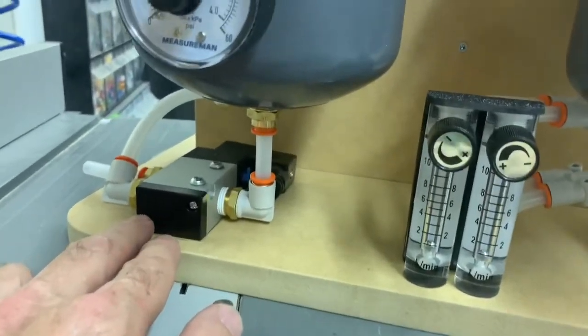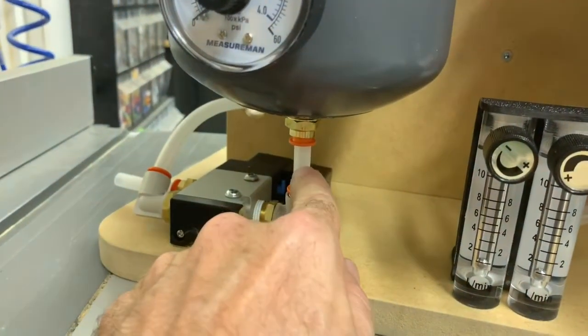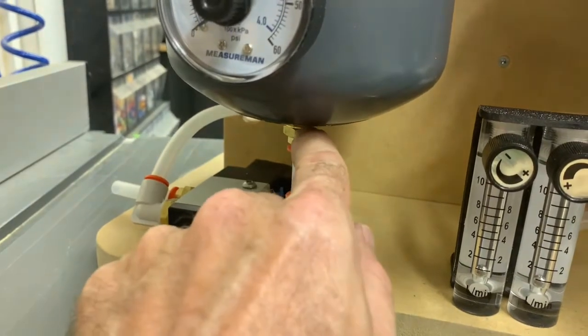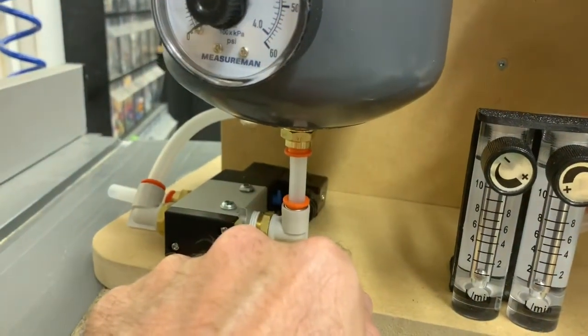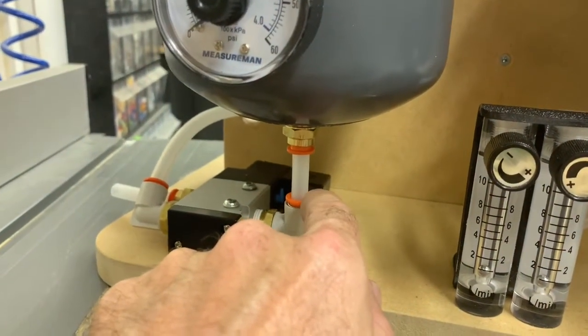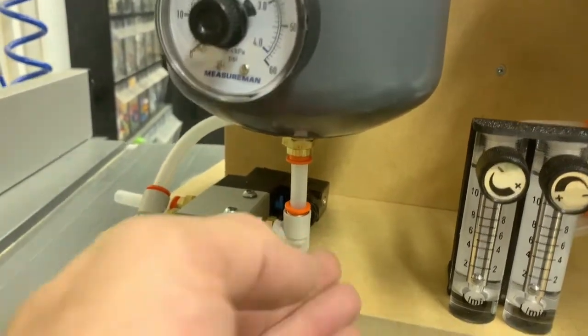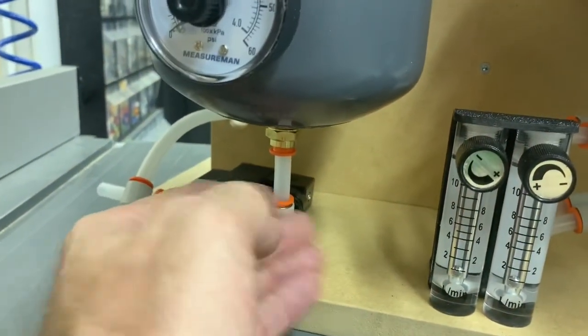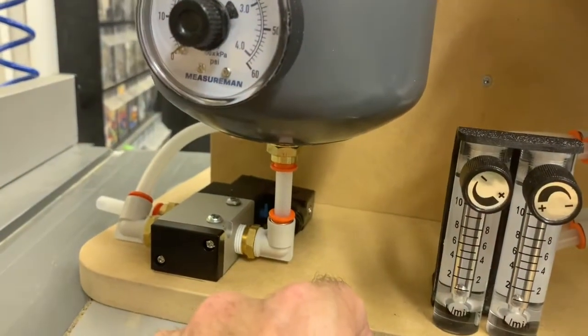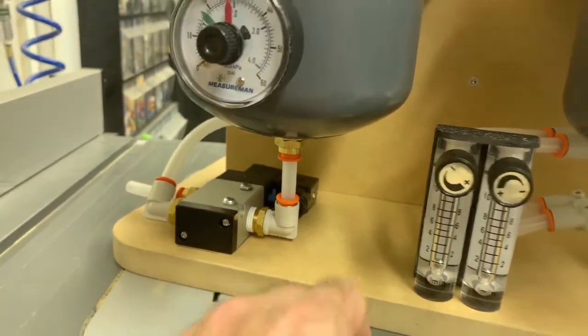Next refinement you'll notice is there's almost no tubing in between the valve and the sieve. We're working to minimize wasted air. Anything between the valves is wasted if it doesn't have zeolite in it. So we work to minimize that.